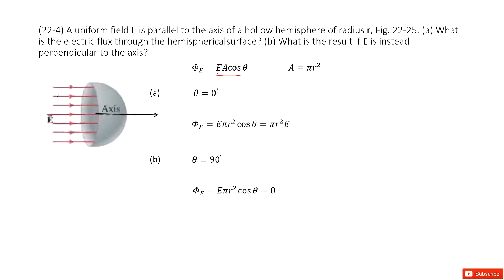So we can see A is the cross-sectional area. For this surface, it is a circle. The cross-sectional area is πr². Now next, we need to find angle theta.